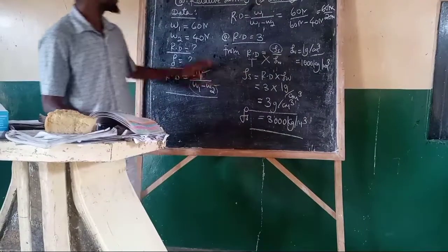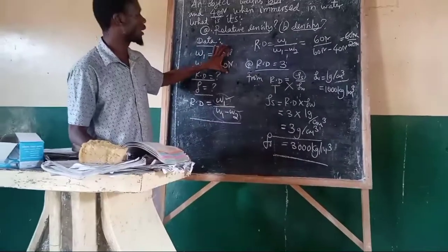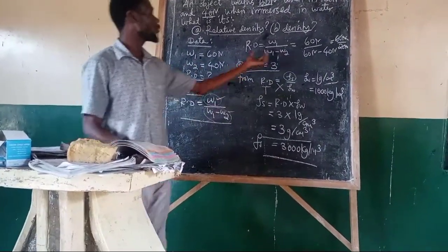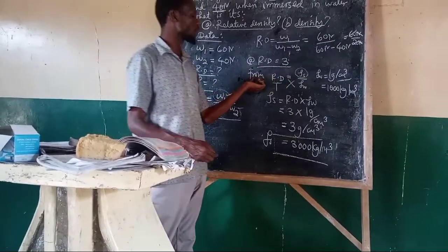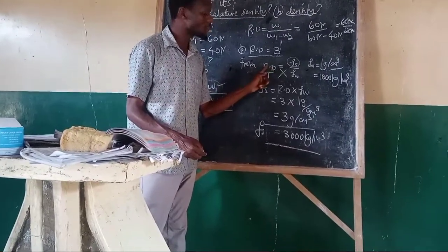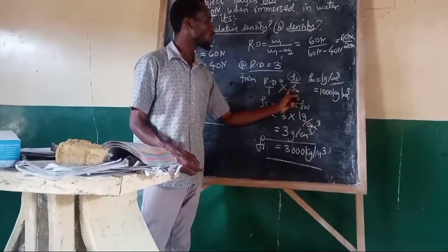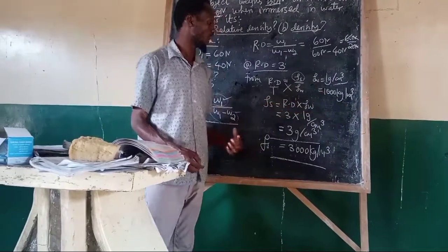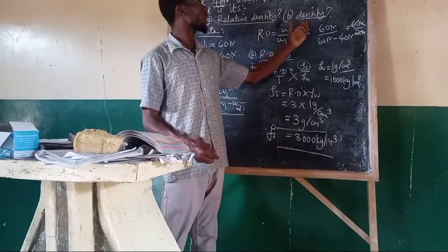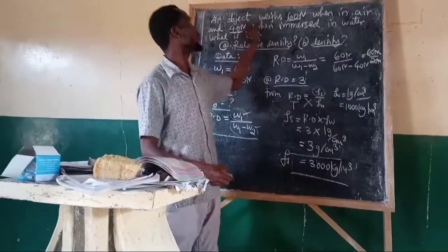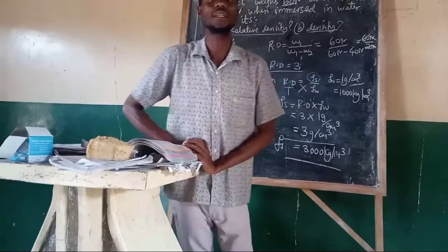So, if you are given the weight of an object in air and weight of an object in water, we can use this to determine the relative density using the formula. After getting relative density, we use it to determine the density of the substance through the principle that relative density equals density of substance over density of water, where density of water is constant. That is how we determine relative density and density of a substance using Archimedes' principle.